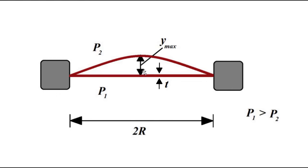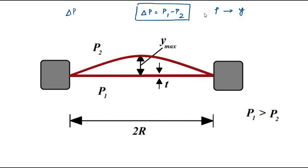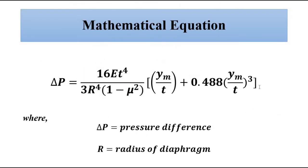We need to establish a relationship between the pressure and the displacement. Here, P1 is the pressure on one side of the diaphragm and P2 is on the other side. Since P1 is greater than P2, the pressure difference is P1 minus P2. We need to establish a relationship between this pressure difference and the deformation or displacement of the diaphragm — these two important parameters.